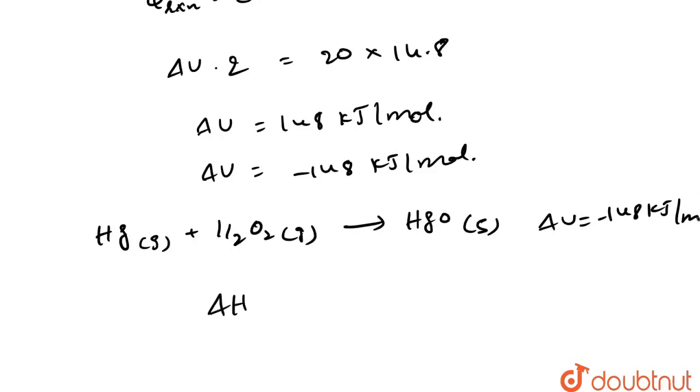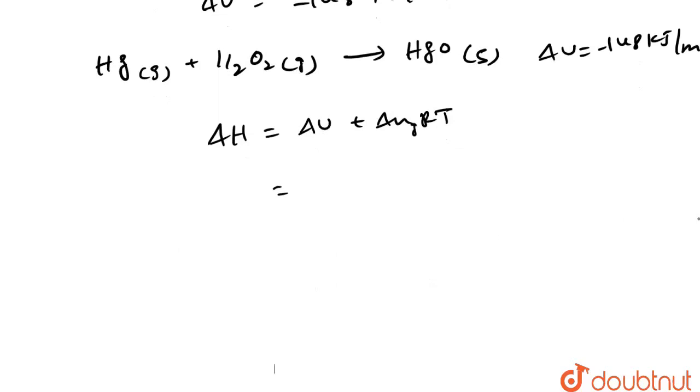By this, the change in enthalpy, we will calculate delta H. The relation according to first law of thermodynamics is delta H equals delta U plus delta N RT. Delta N is the number of gaseous molecules.